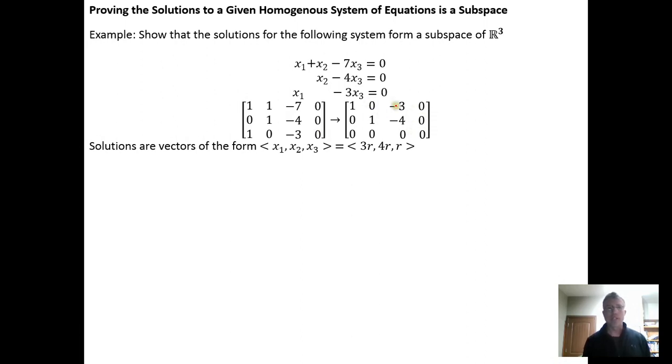And in this case, when we do that, we get that the solutions look like this: x1, x2, x3, the three components are going to be equal to 3r, 4r, r. So here's what the solution vectors look like for our system of equations. And now what we want to do is show that the solution to this system is actually a subspace of R3.